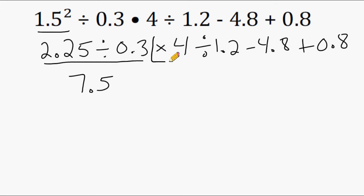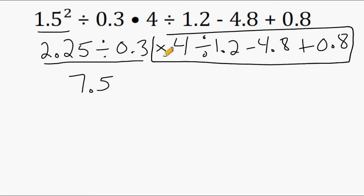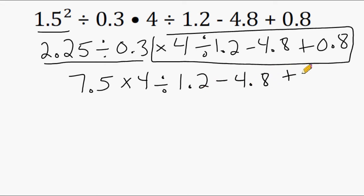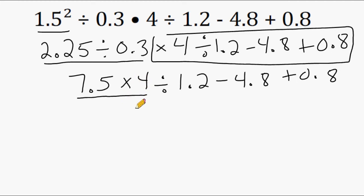Next we have to bring down everything from the previous step that we didn't touch yet. We have to bring down the times 4. And now we go back to the beginning of our expression and do any multiplication or division from left to right. Right away we have a multiplication sign, so we have to multiply 7.5 by 4. Now 7.5 times 4 is really mental math — whenever you multiply something by 4, it's just doubling it twice. So if we double 7.5, that gives us 15, and then if we double 15, that gives us 30.